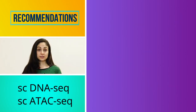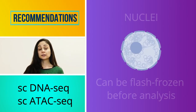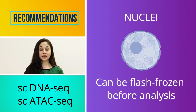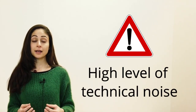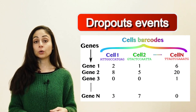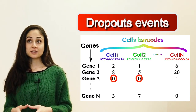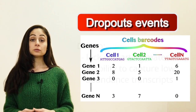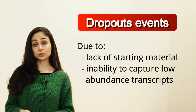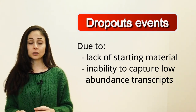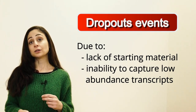In the case of single-cell DNA or ATAC sequencing, the starting materials are nuclei, so in this case we can use flash-frozen samples. However, there are some challenges associated with this technology. In particular, single-cell sequencing suffers from a high level of technical noise related to the so-called dropout events — genes with no observation or zero counts — due to the inherent lack of starting material and inability to capture some exceptionally low-abundance transcripts, related to the inefficiency of the retrotranscription step and the relatively shallow sequencing depth used in this approach.